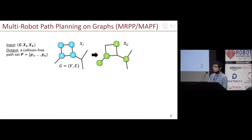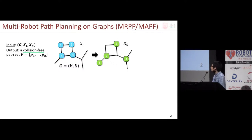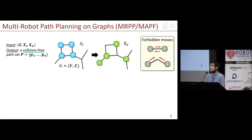Given a graph G, a set of robots with start configuration XR and goal configuration XG, we are tasked to find paths for moving the robots from XR to XG. Multiple robots can move along graph edges simultaneously, but collisions must be avoided. Two types of moves are forbidden: two robots cannot exchange locations using the same edge, and two robots cannot occupy the same vertex at the same time.